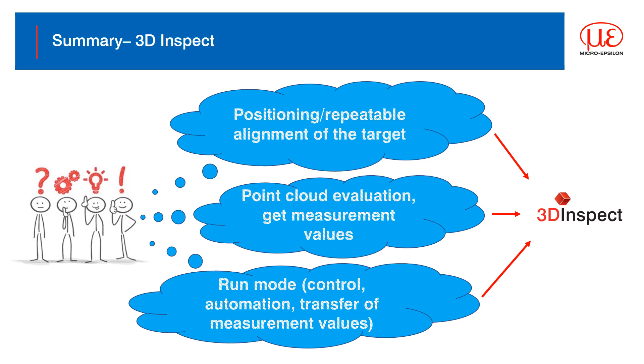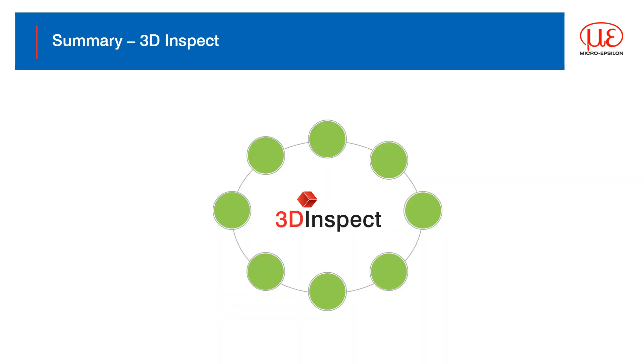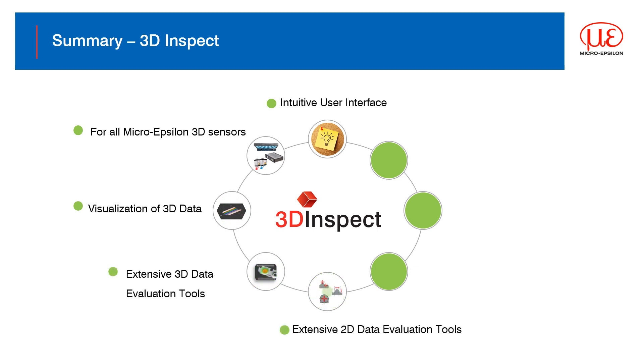3D inspect has been designed to provide a platform for MicroEpsilon's 3D sensor portfolio. The software helps with the processing of the point cloud data and includes tools for inspection in 3D and 2D. The ability to set OK, not OK signals and communications for data transfer makes it a comfortable package for users to get started and to develop their inspection routines.